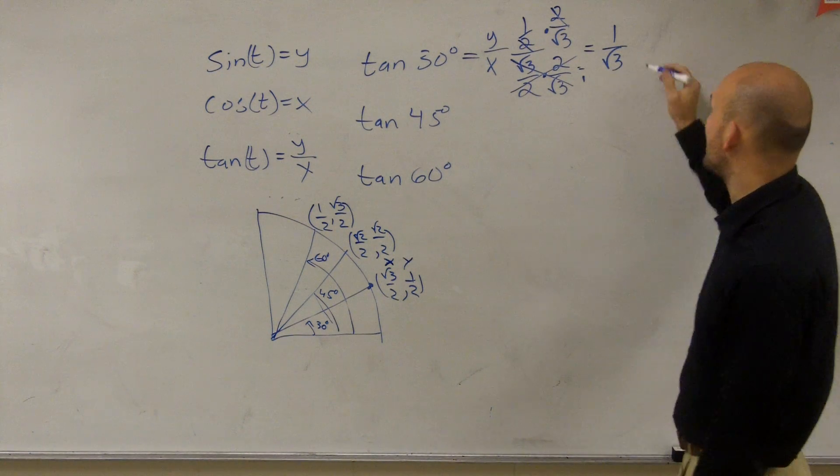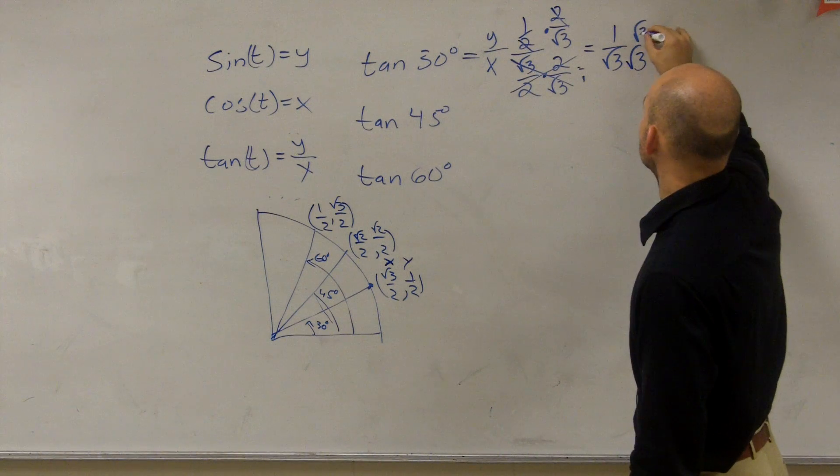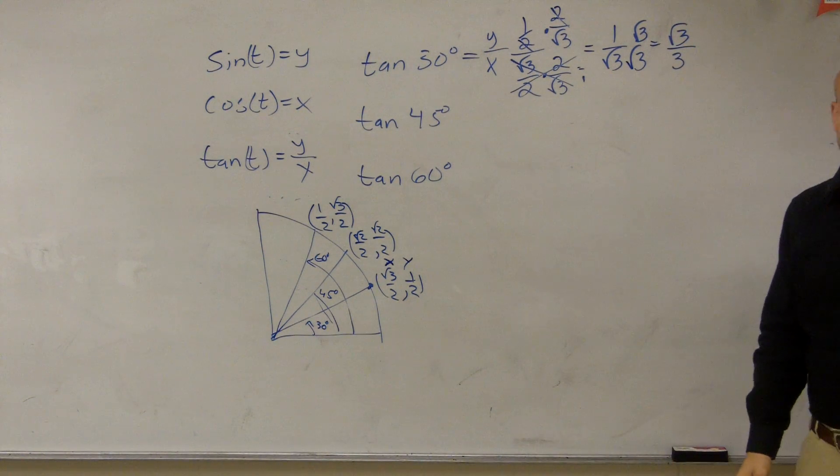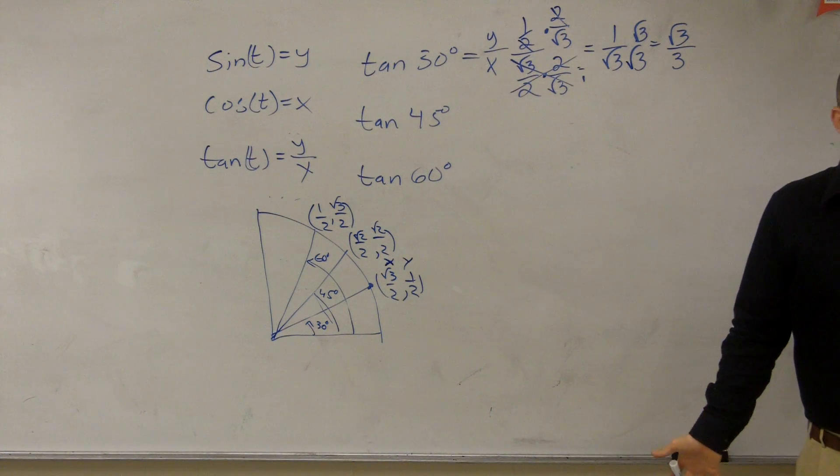Now, you cannot have a radical on the bottom, so you rationalize the denominator, so you end up with radical root 3 over 3. Alright, tangent's a lot of work, it's not as easy as sine or cosine.